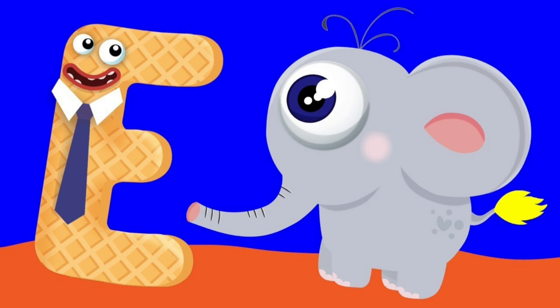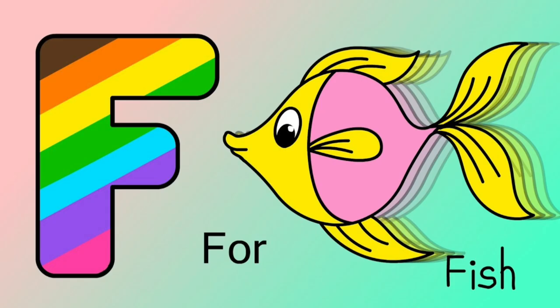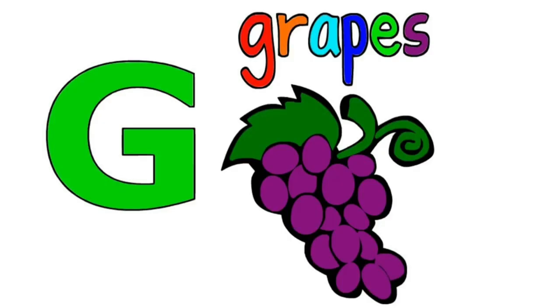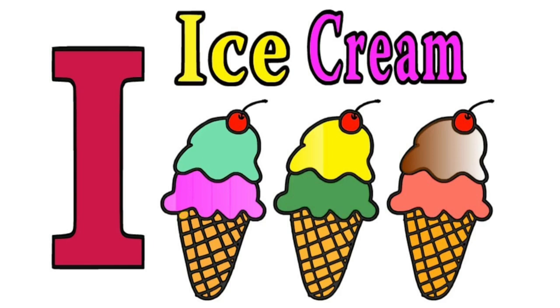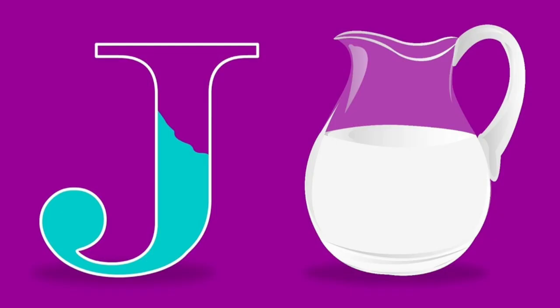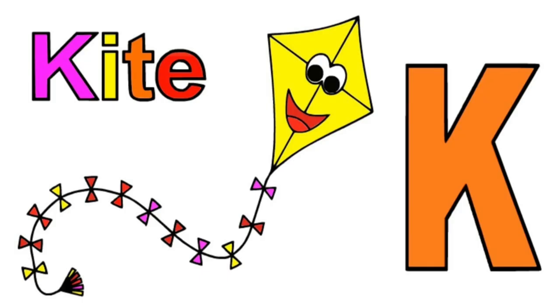Elephant means Hathi. F is for Fish. Fish means Machli. G is for Grapes. Grapes means Angoor. H is for Hand. Hand means Haath. I is for Ice Cream. J is for Jug.